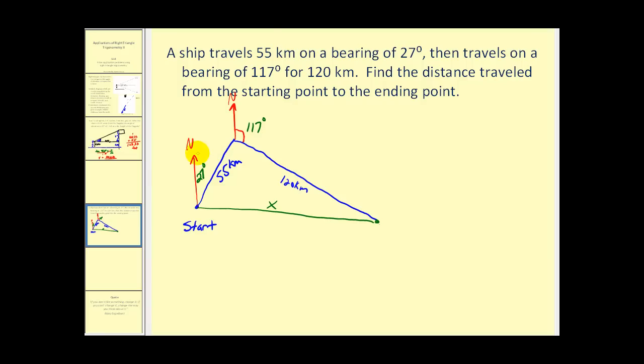The first thing we should notice is that these two red lines would be parallel, because they're both due north. If they're both due north, these two interior angles would be supplementary, or would add to 180 degrees. So 180 minus 27 would give us 153 degrees for this angle.